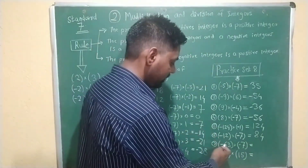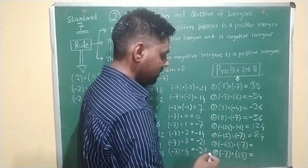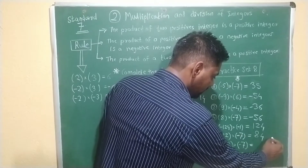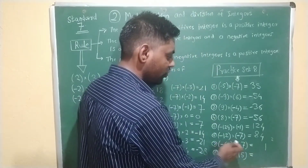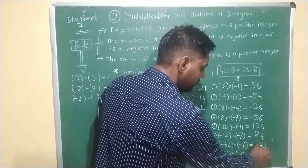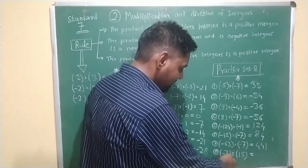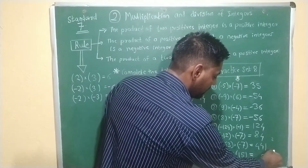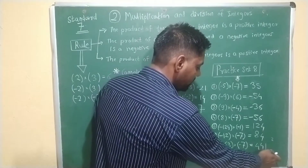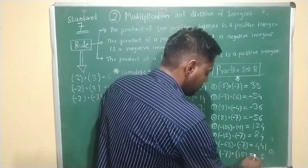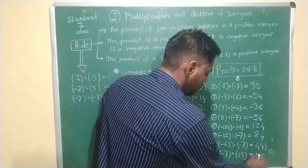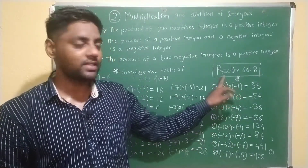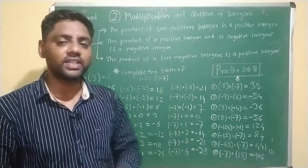Next example: minus 63 multiplied by minus 3. Both negatives, so answer is positive. 7 into 3 is 21, carry 2; 7 into 6 is 42, plus 2 is 44. Last example: minus 3 multiplied by minus 35 — 7 into 5 is 35, carry 3; 7 into 1 is 7, plus 3 is 10. So the answer is minus 105. We completed practice set 8 as well as the tables of minus 6 and minus 7.